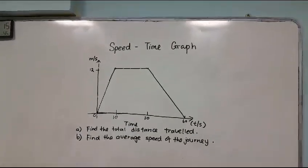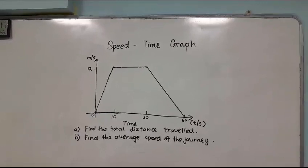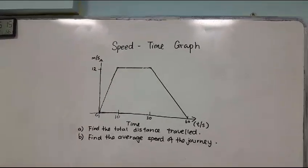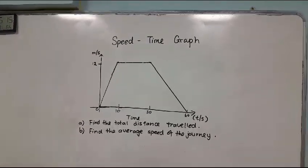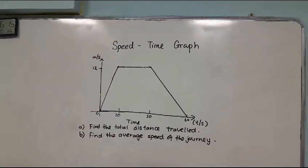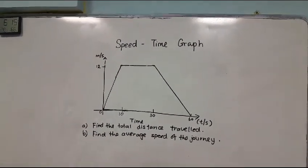As mentioned earlier on, one of the earlier topics in the secondary 4E math syllabus is speed-time graph. Here, students are supposed to find the total distance traveled and the average speed of the journey using the graph as shown.